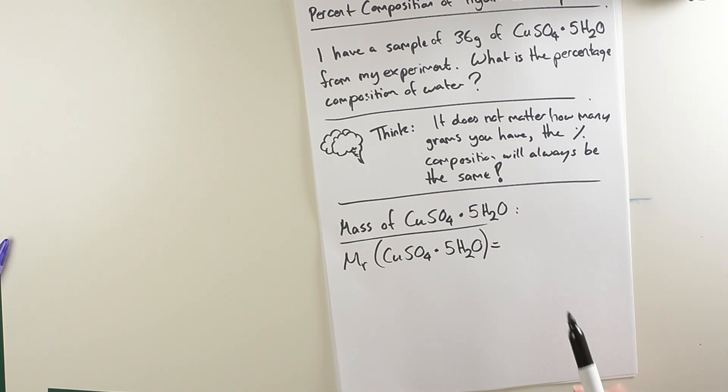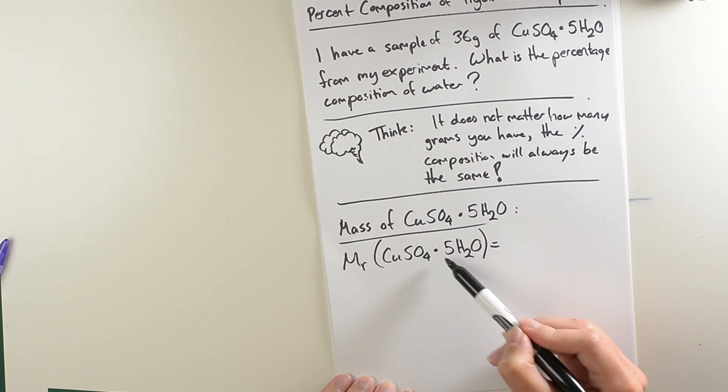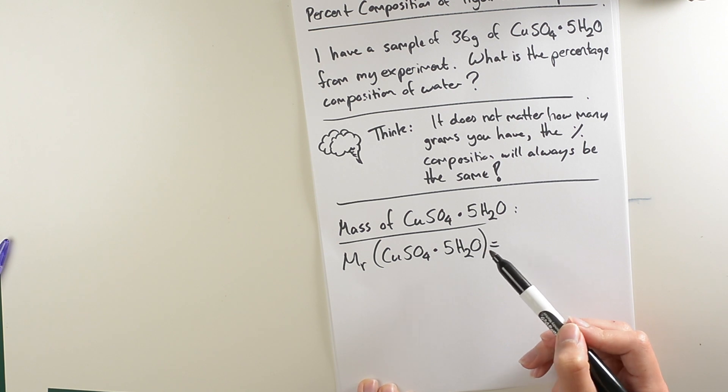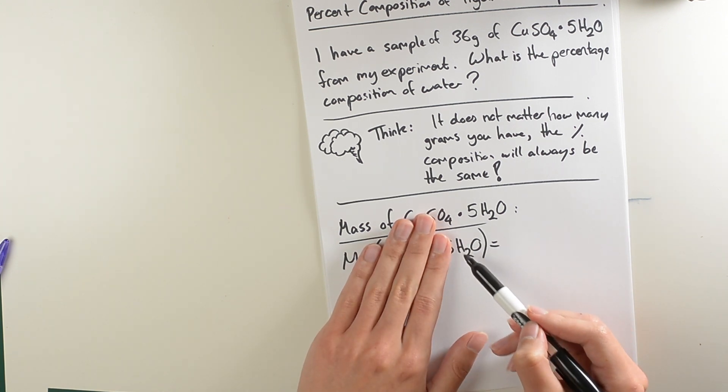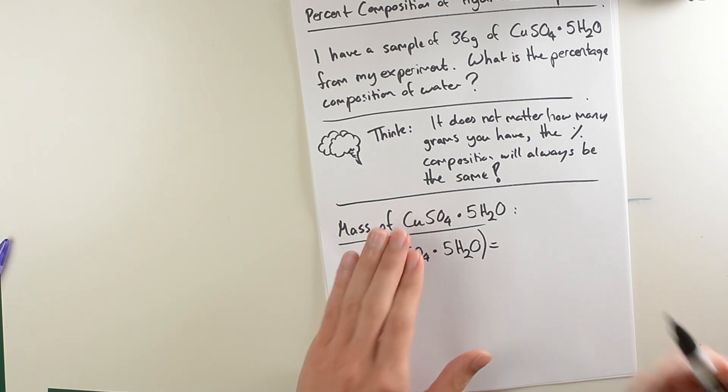Now when doing these calculations you need to take in consideration we have five groups of these molecules. So we have to multiply whatever the relative atomic mass of each of those elements, multiply that result by five.